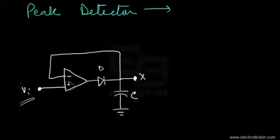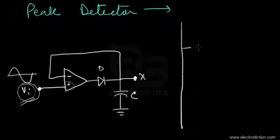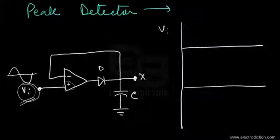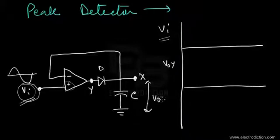The input voltage V-I is basically a sinusoidal or time-varying input signal. We're using this circuit to record the peak voltage levels of this input voltage signal V-I. Here we would have the output voltage at terminal Y, and we require a final output voltage from terminal X — I'll call it V-O-X in this case.